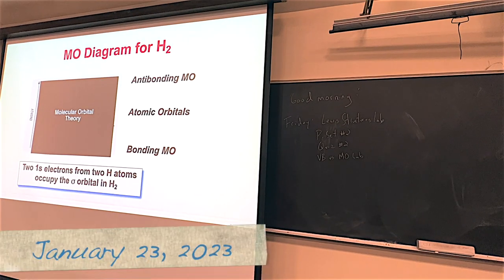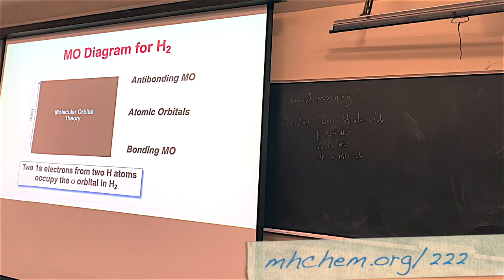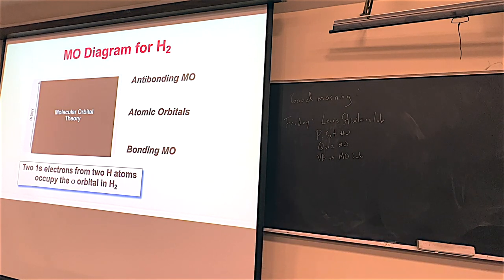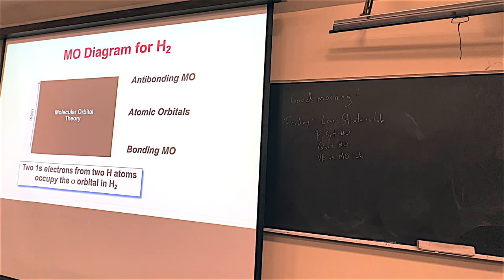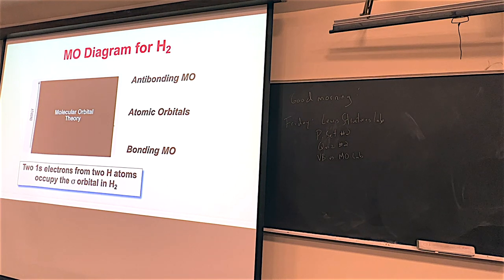What we're going to do today is continue talking about molecular orbital theory. We're talking about the two main theories used in chemistry to describe the why — why molecules form the different patterns. We went through hybridization theory, which was SP, SP2, SP3, and now we're going through molecular orbital theory. This Friday the Lewis Structures lab we started last Friday. Problem set number two is up, which will have VB and MO kind of problems. Quiz number two. And then we'll also do the VB versus MO lab so we can compare some molecules directly.